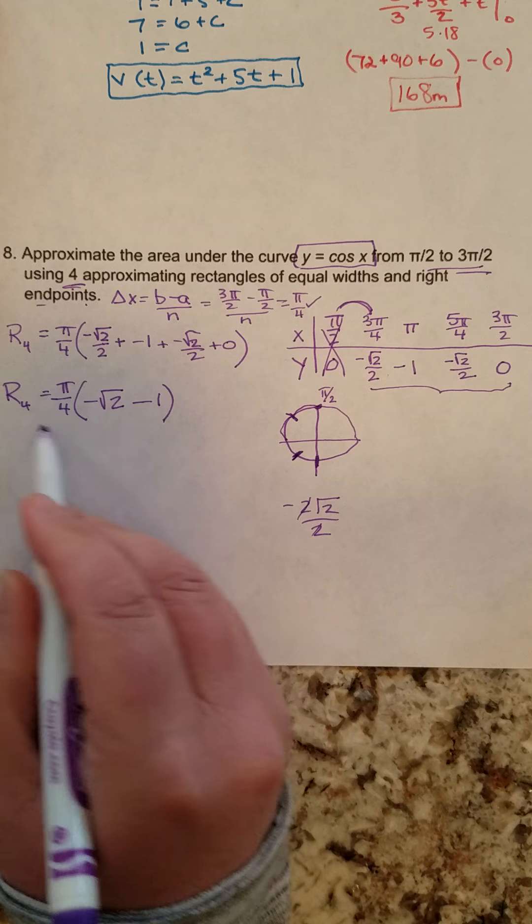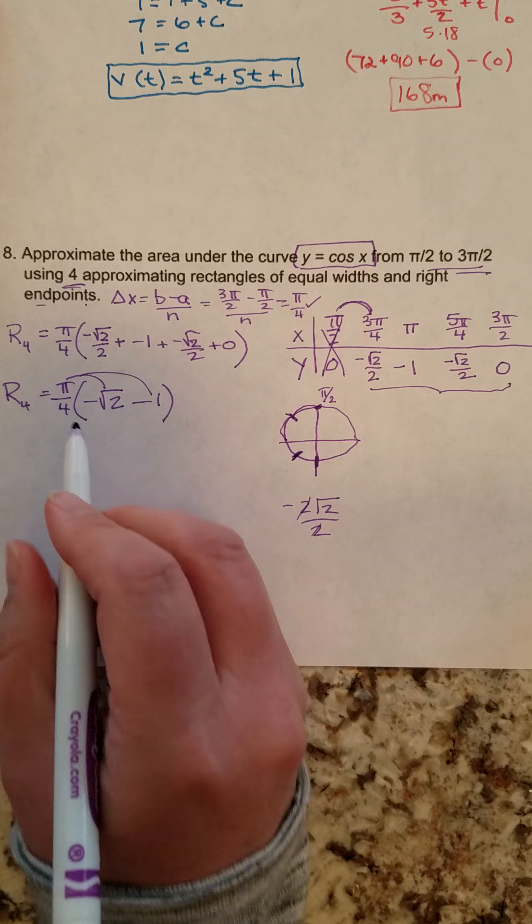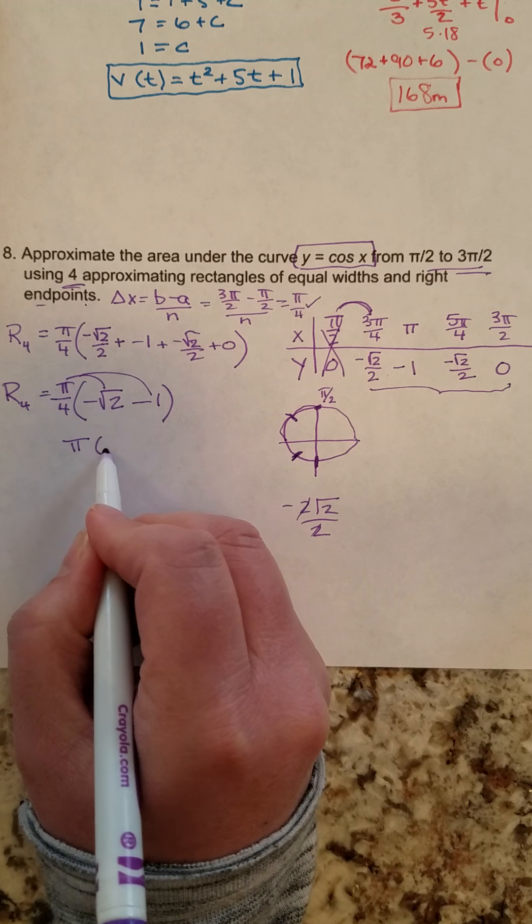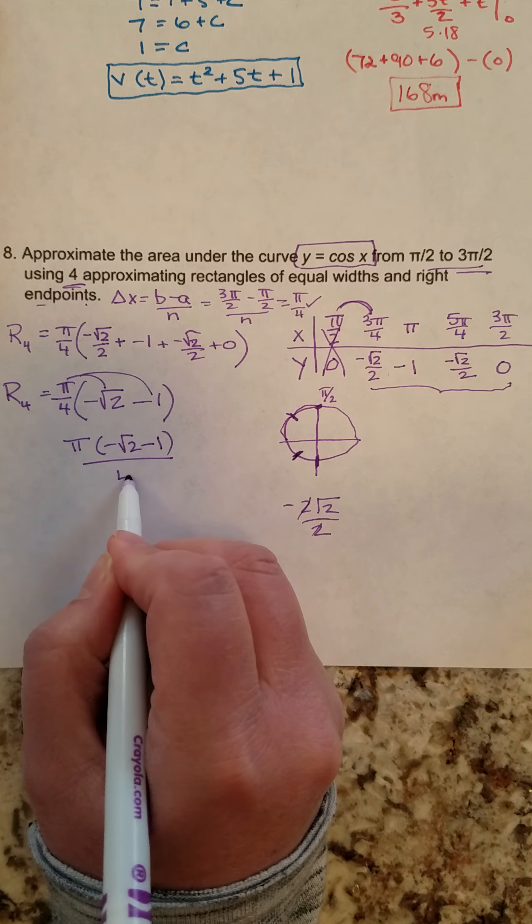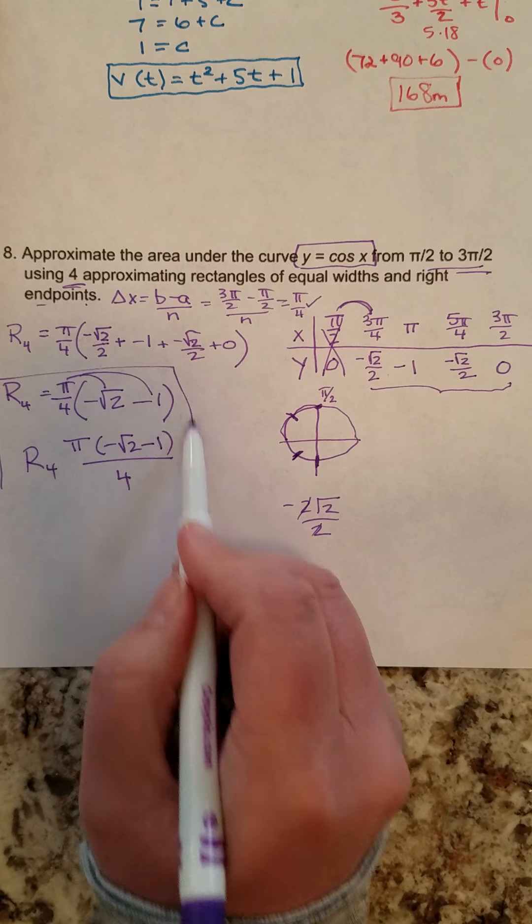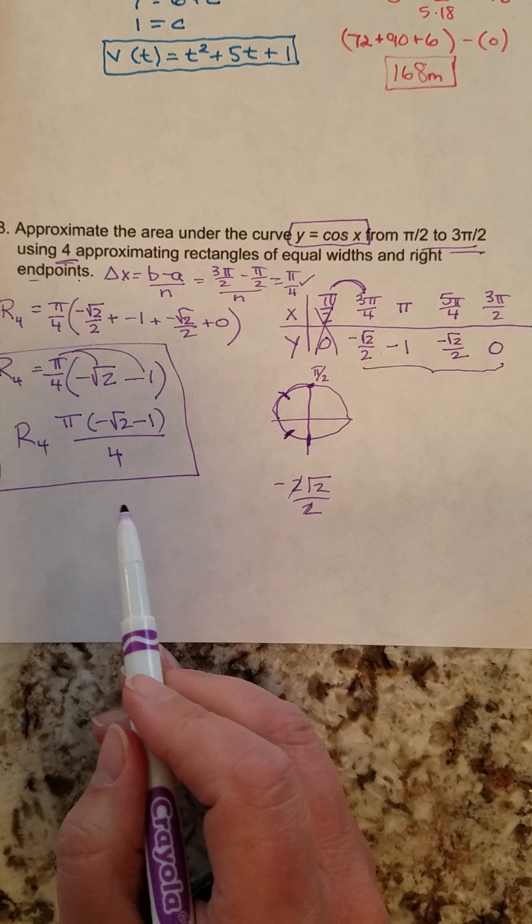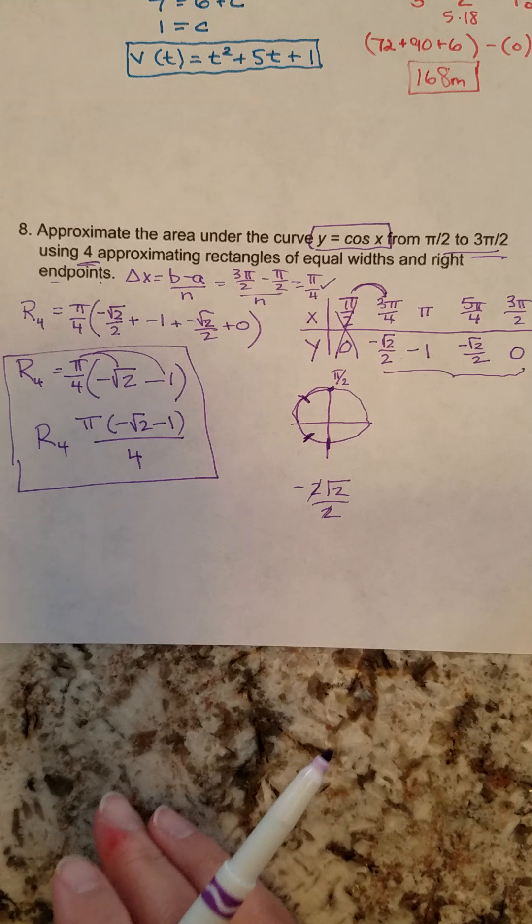And of course, you could leave your answer that way right there. You could distribute this if you really thought it did anything. You really could write it like this as well. Any of those are perfect. Does not matter to me which way you write it. But please don't give me a decimal for this right here.